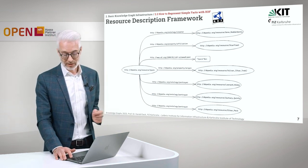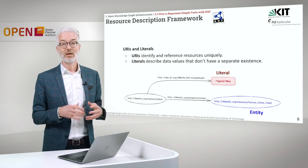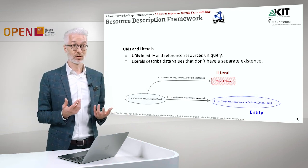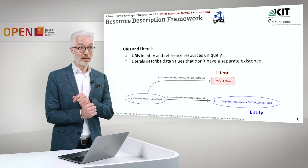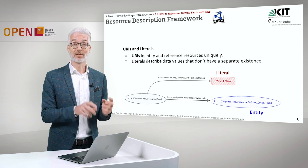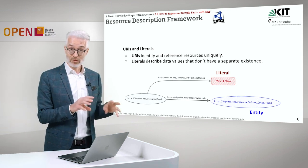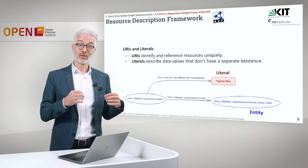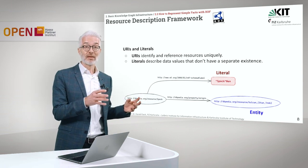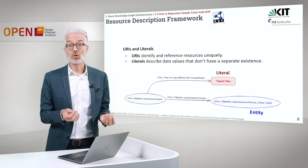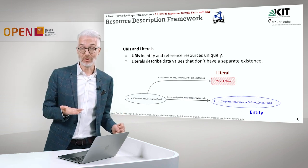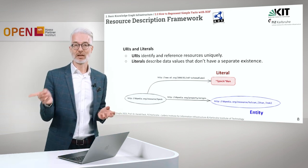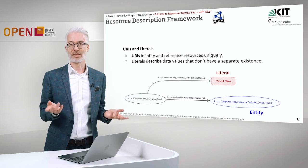Graph notation doesn't fit well into a computer, so we need another kind of representation. But first, let's look at the basic components needed for the Resource Description Framework. We will need URIs or IRIs that uniquely identify and reference the resources we are talking about. We also need literals — literals denote data values, things that don't have a separate existence of their own. These are two different kinds of nodes, usually represented as ellipses or circles versus rectangles in our graphs.